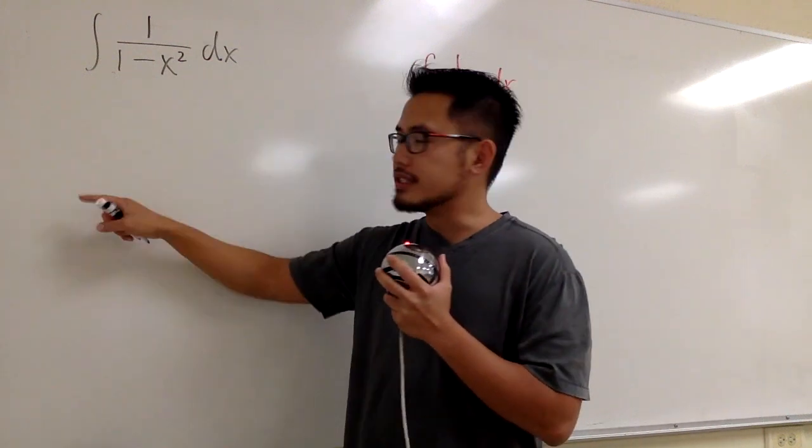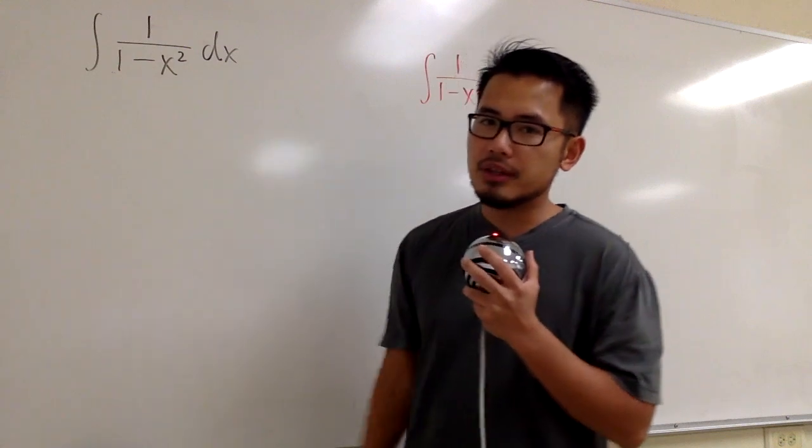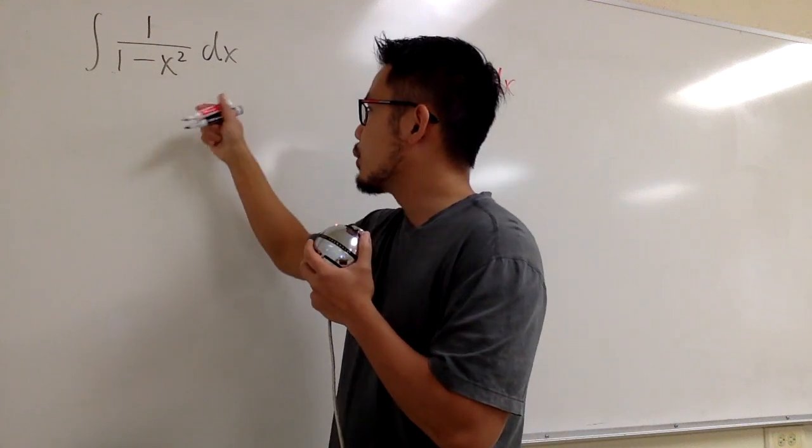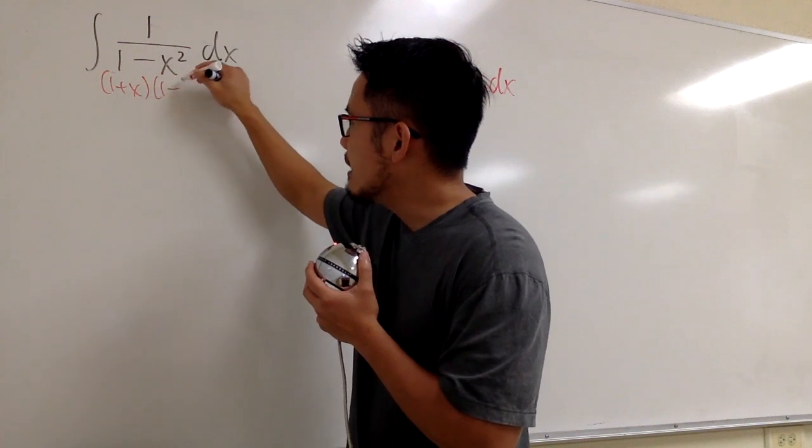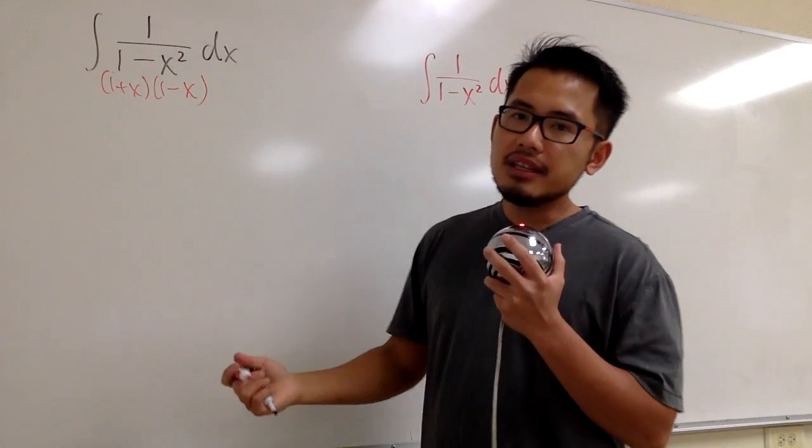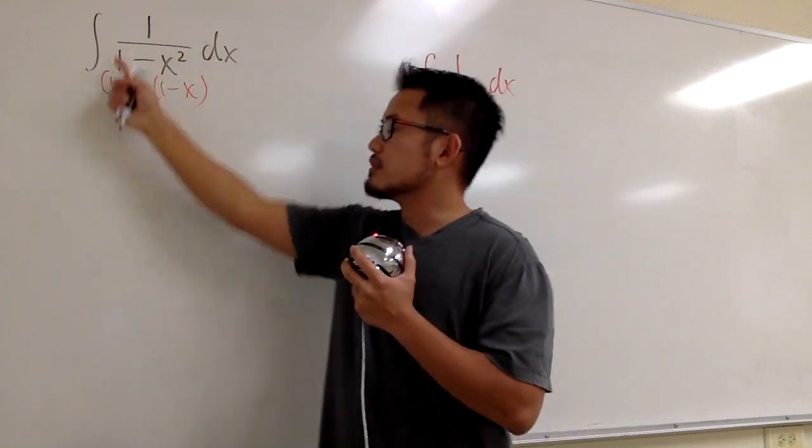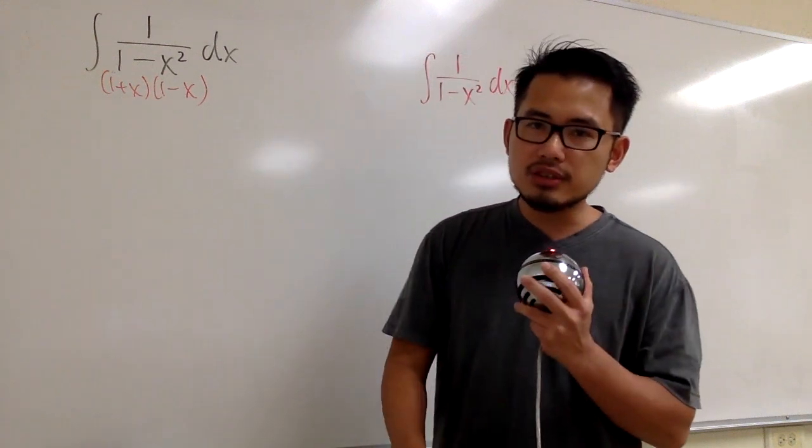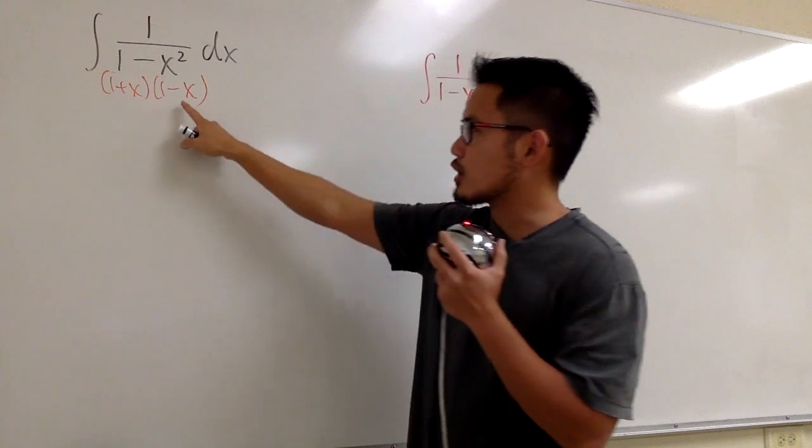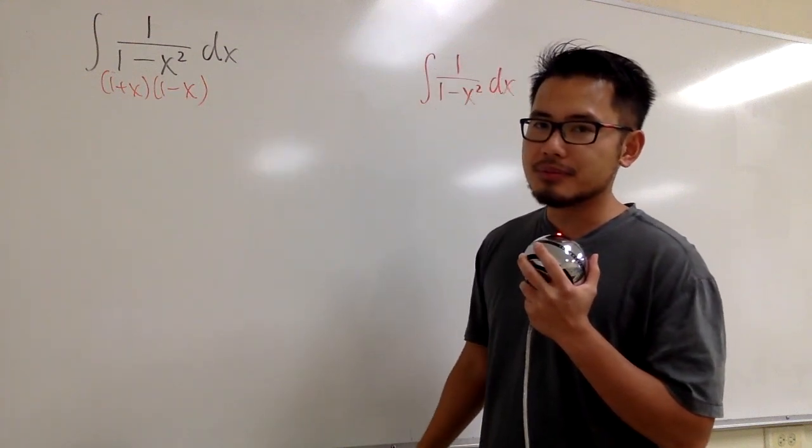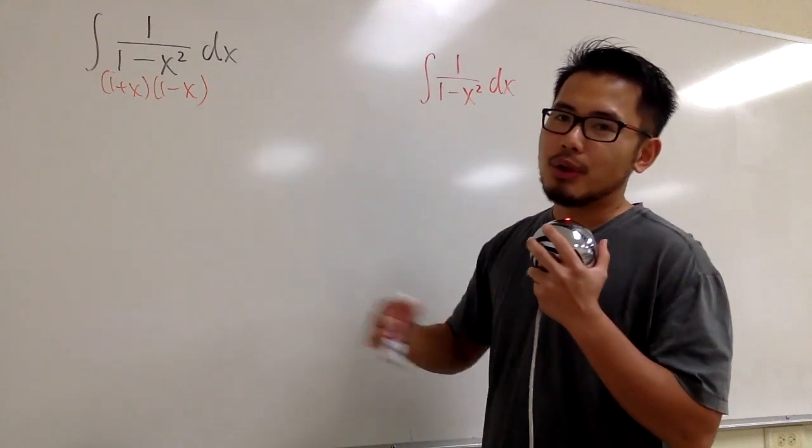In this case, you see, we can actually factor the denominator, 1 minus x squared. Let me factor this as 1 plus x times 1 minus x. And the idea here is that we can break this fraction into two little fractions, and the first fraction will have this for the denominator, and the second little fraction will have that for the denominator. And the process for that is called the partial fraction, right?